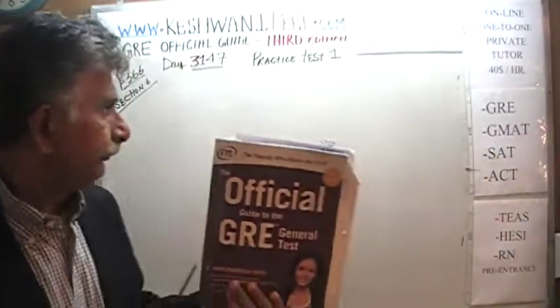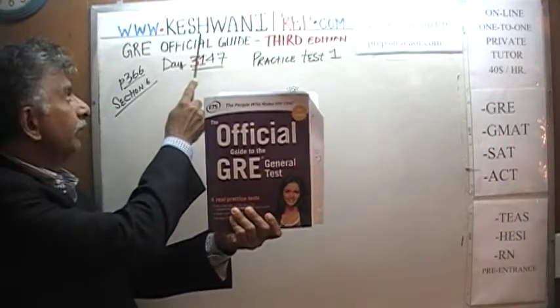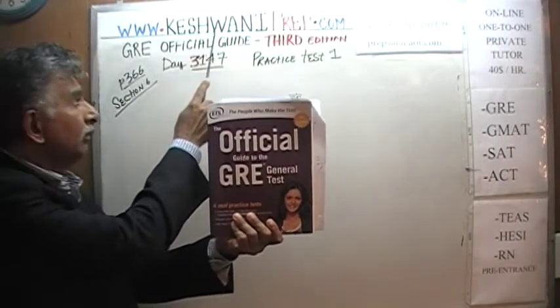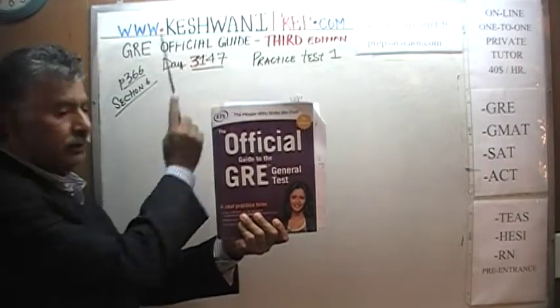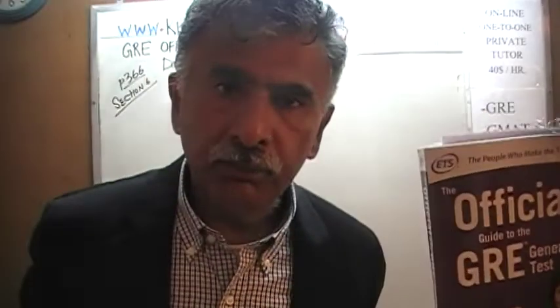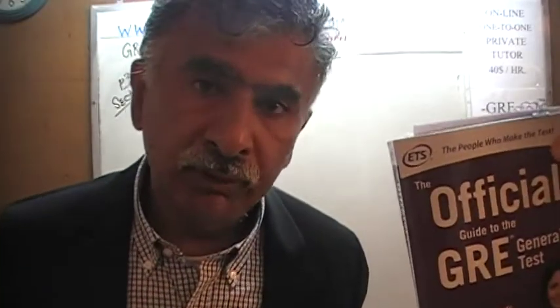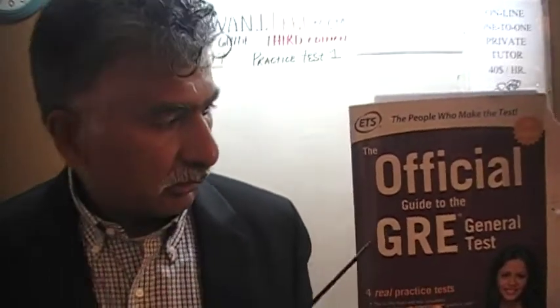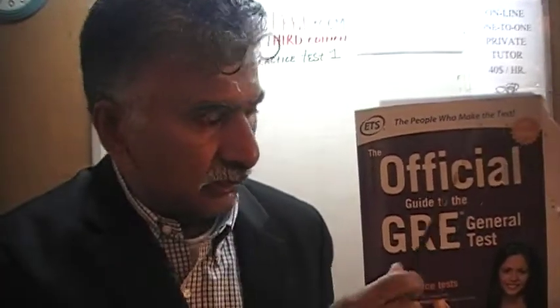Hello, my name is Keshwani — that is K-E-S-H-W-A-N-I. We are here because we want to prepare for the GRE. We have been solving math problems out of this book, the Official Guide to the GRE, third edition. If you do not own this book already, purchase it immediately — you are going to need it.